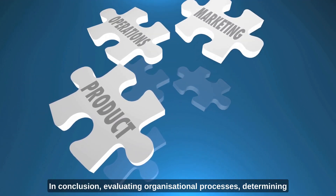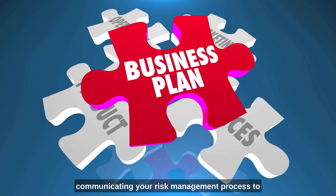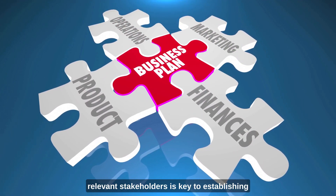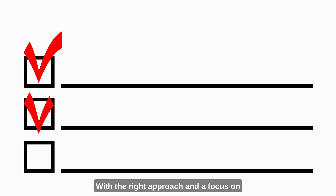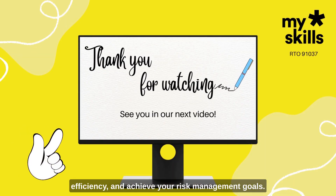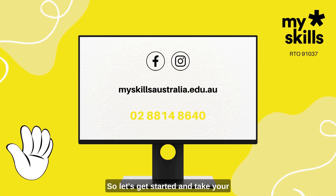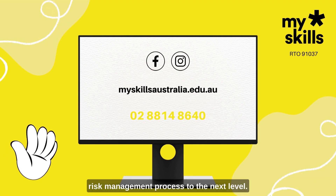In conclusion, evaluating organizational processes, determining the scope for risk management, and communicating your risk management process to relevant stakeholders is key to establishing a successful risk management process. With the right approach and a focus on fun and engagement, you can minimize risk, improve efficiency, and achieve your risk management goals. So, let's get started and take your risk management process to the next level.